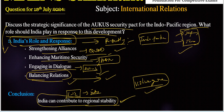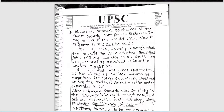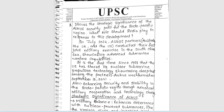This is the best approach to this question — we need to include all recent developments. Now let us check today's answer written by Sindhu Dhanati. In July 2024, AUKUS partners conducted their first joint military exercise in the South China Sea — very good, this is a current affairs introduction. It is the first time since 1958 that the US shared its nuclear submarine technology. When AUKUS was formed is also written with good facts.